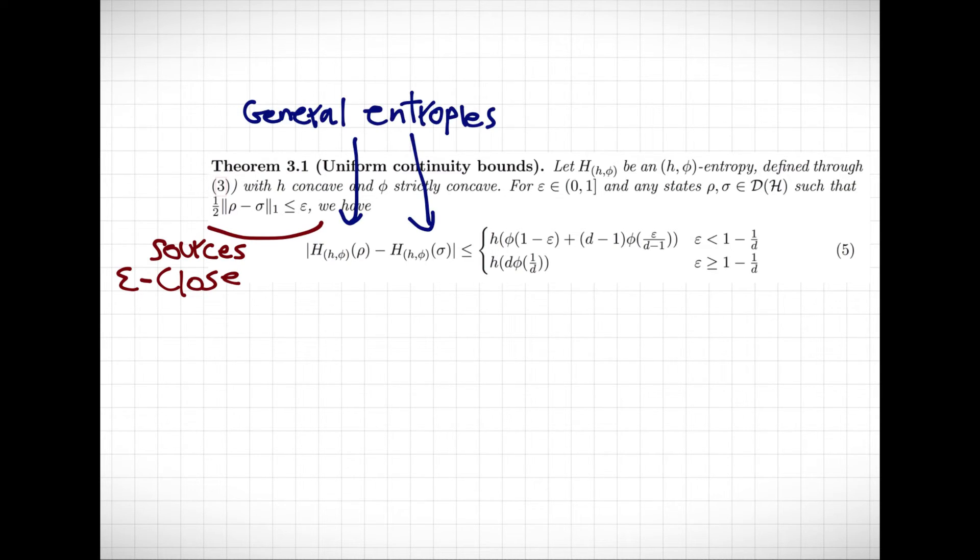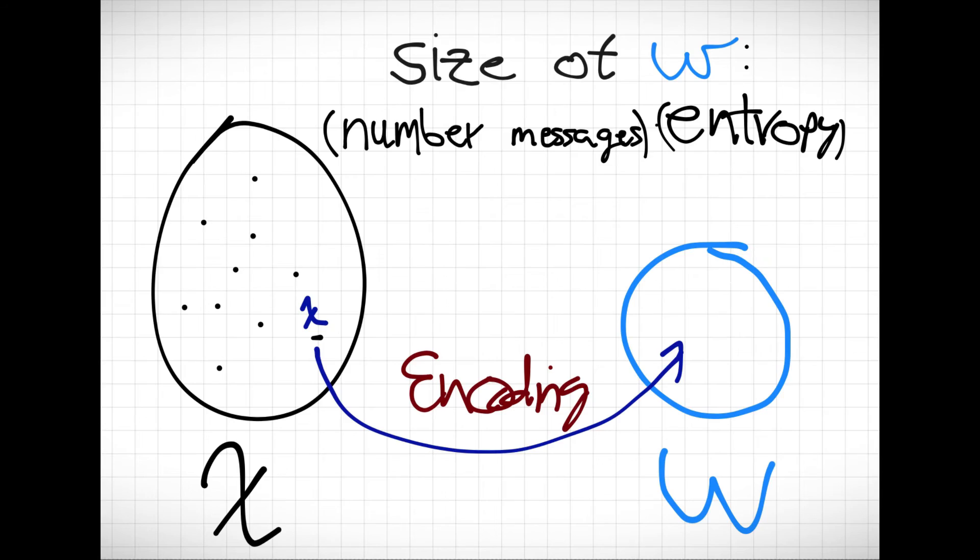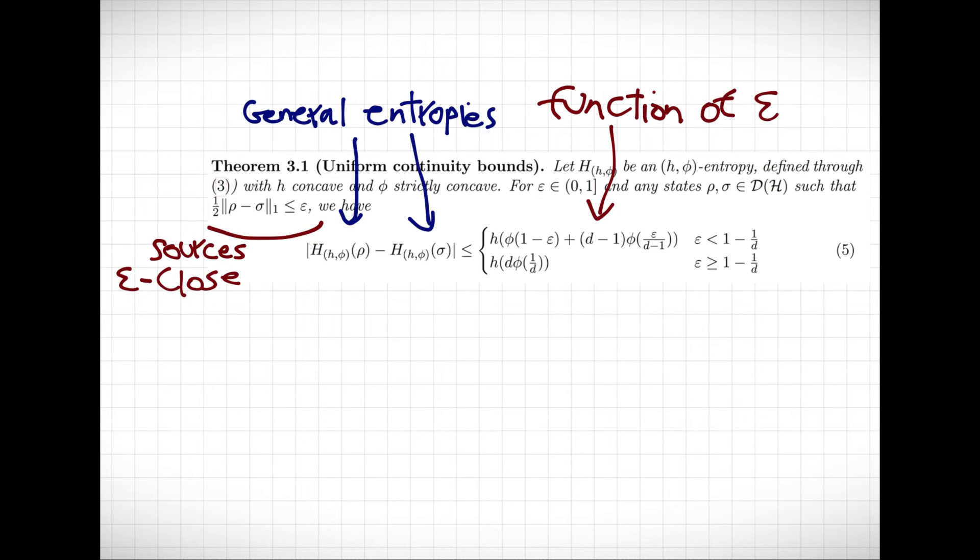Then we can bound the errors in the entropy, which gives us this ideal rate of compression, in terms of the errors in the model.